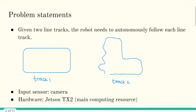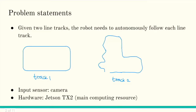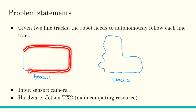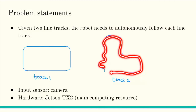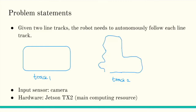Before that, we need to understand the problem statement of this task. Given two line tracks — on the first track you can see on the left, and this is the second track — we need to make the robot autonomously follow each line track. For the first track it will start from this position and follow the line until it finishes at the starting point. The most challenging task is in the second track.